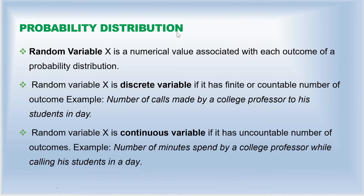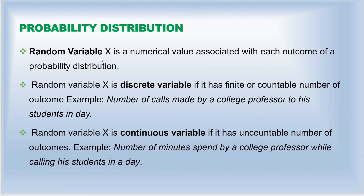In probability distribution, we will always see something called a random variable. The random variable x is the numerical value associated with each outcome of a probability distribution. So when we perform any probability experiment, the outcome of the experiment is denoted by x, and that is called the random variable.